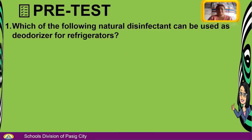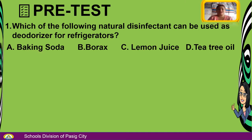Number 1. Which of the following disinfectants can be used as a deodorizer for refrigerators? A. Baking soda. B. Borax. C. Lemon juice. D. Tea tree oil. The answer is A — Baking soda.